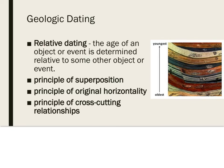Relative dating is a method in which the age of an object or event is determined relative to some other object or event. For example, a geologist may determine that one rock layer is older than another based on their positions in a sequence of rock layers. The principle of superposition states that younger rock layers form on top of older rock layers — so the older layers are on the bottom and the younger layers are on top.